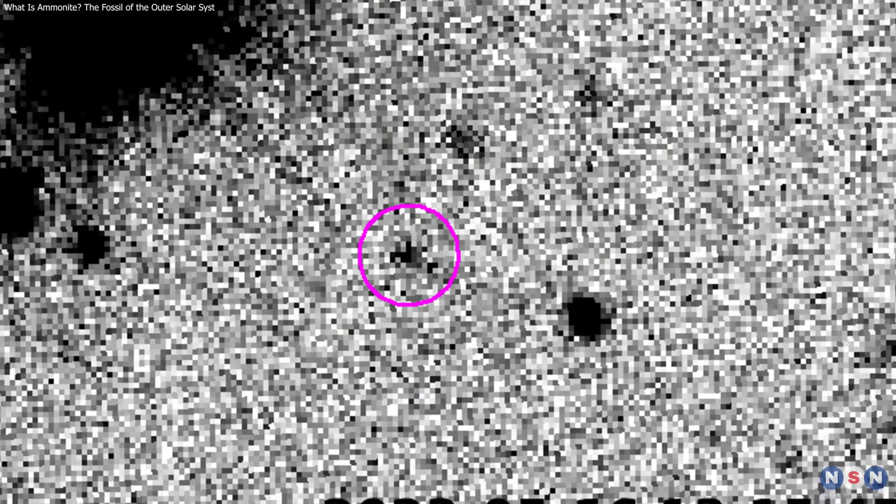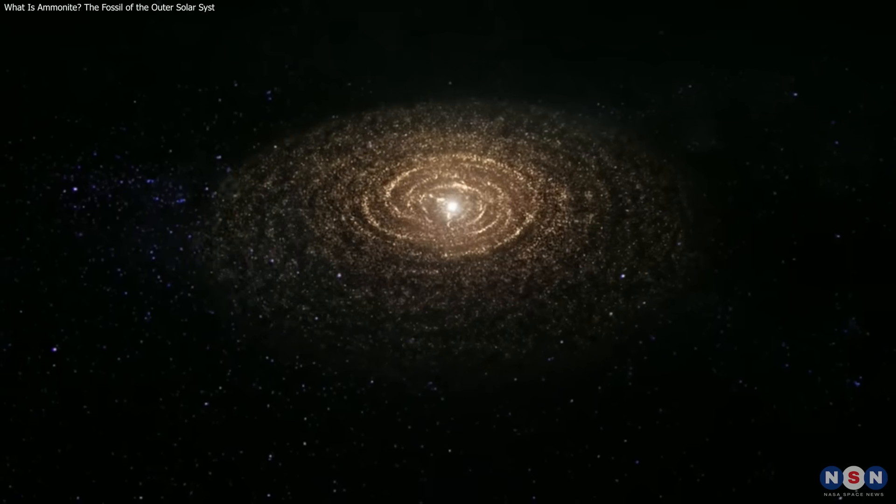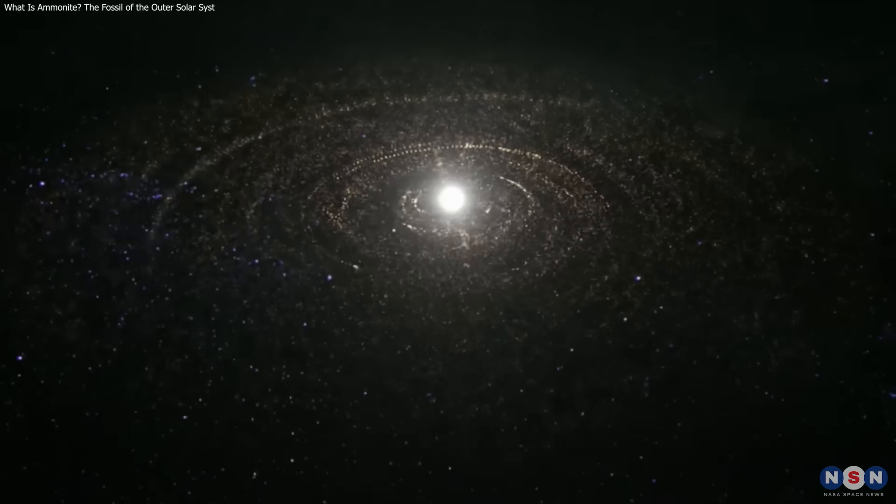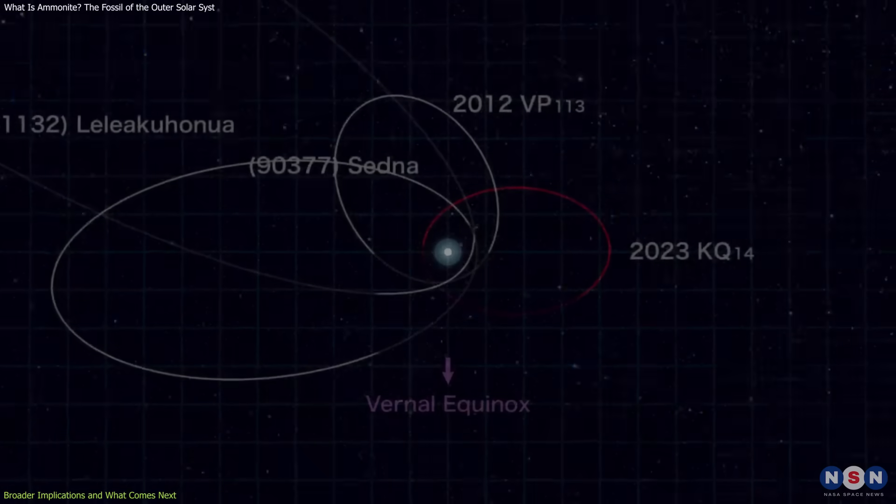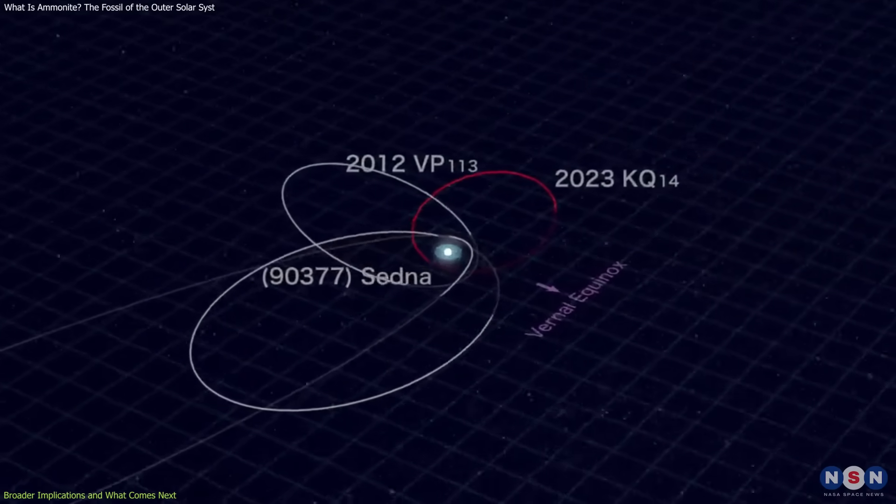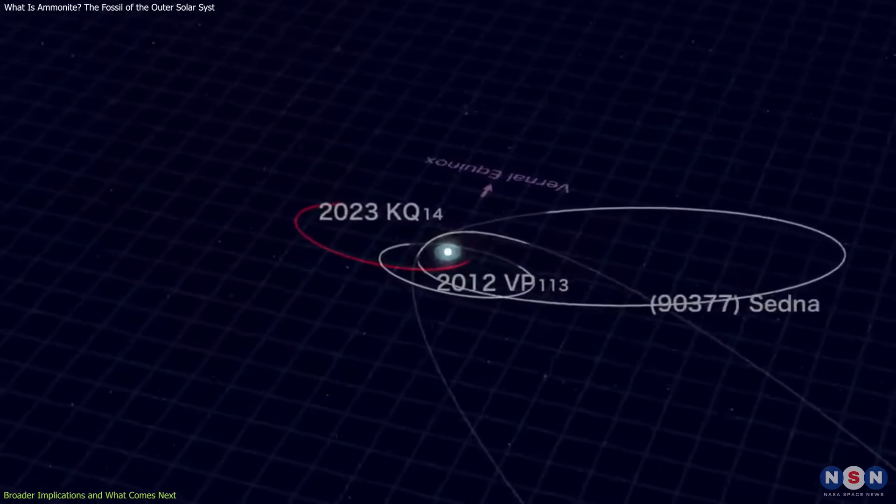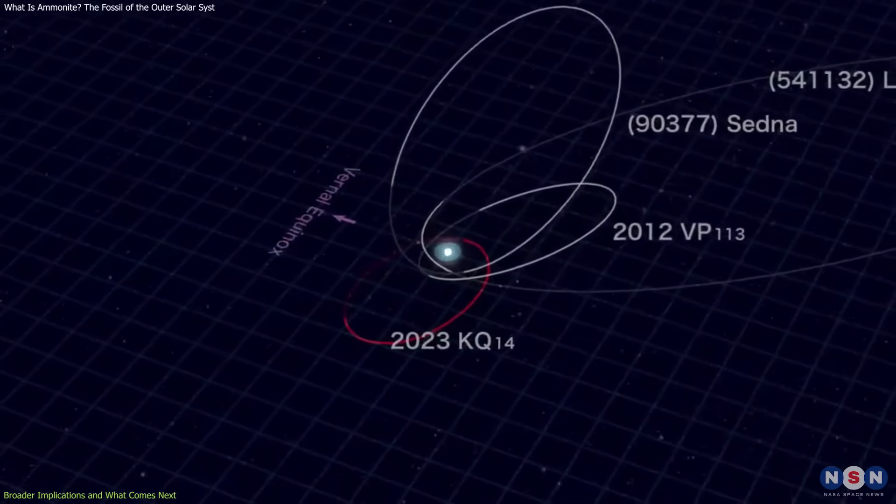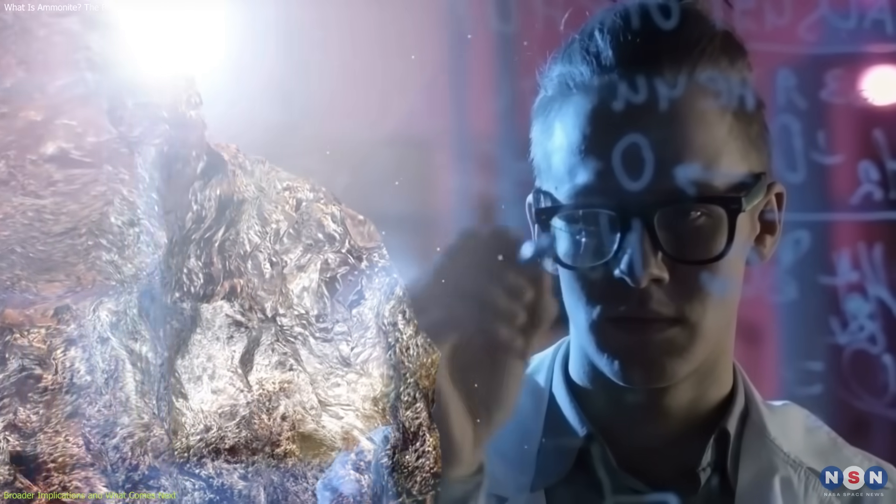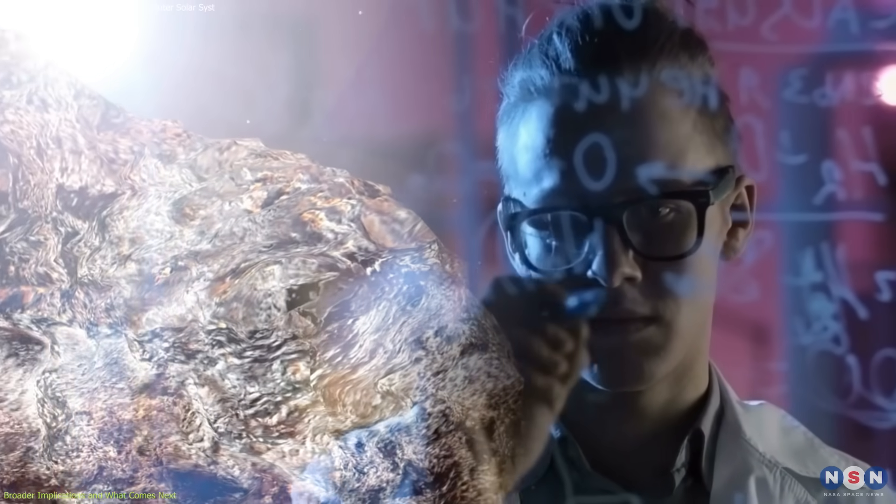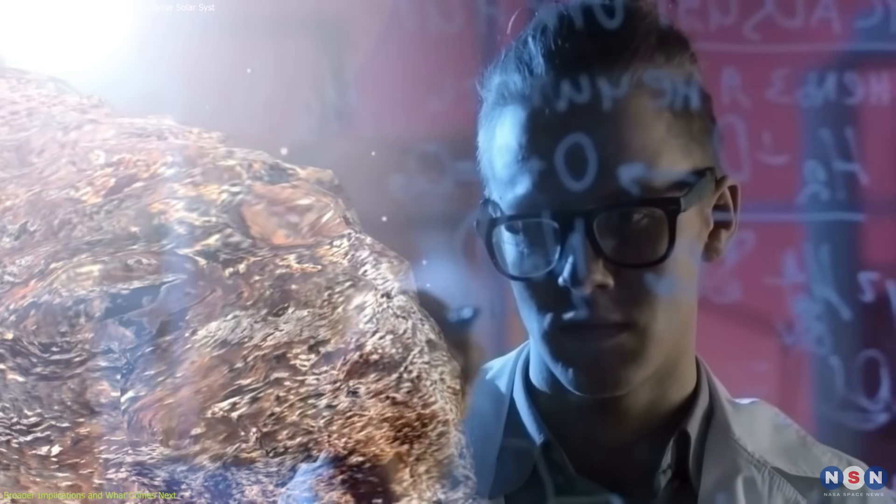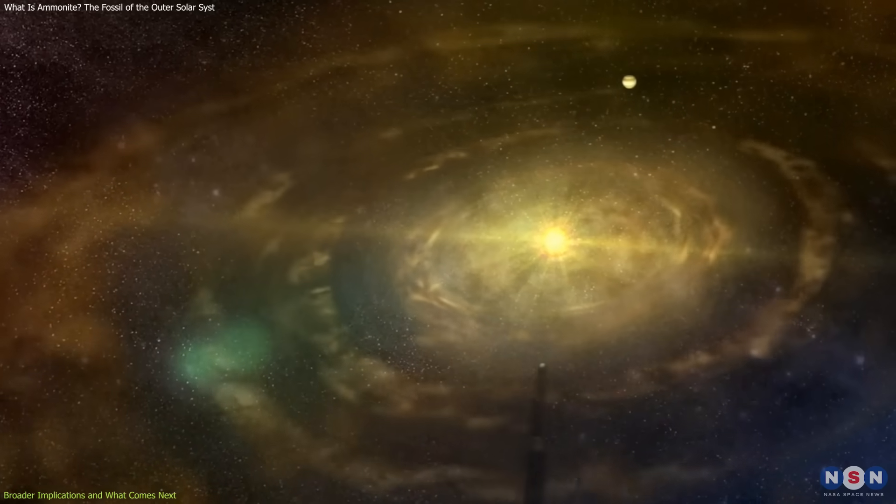Ammonite's orbit raises important questions about the early history of the solar system and the forces that shaped it. With only four known sednoids, the sample size remains small, but it adds a valuable layer of complexity. Rather than confirming existing theories, it encourages astronomers to reexamine alternatives. Several scenarios are now being revisited.